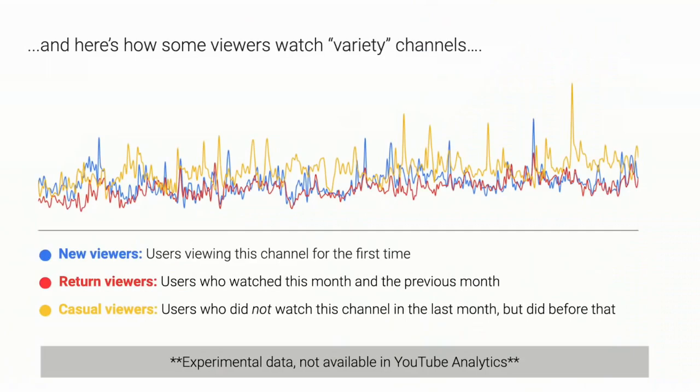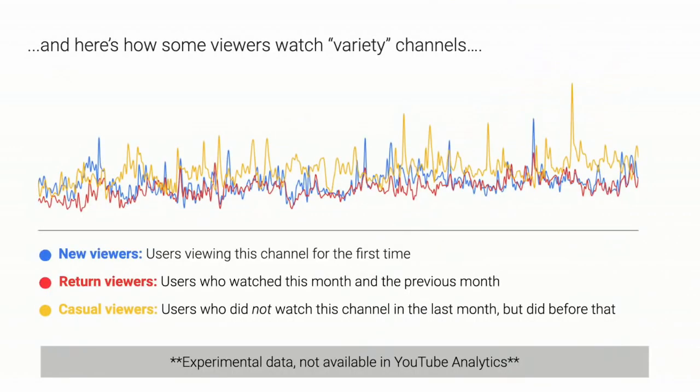Next I want to show a very different group — variety channels — that upload a variety or highly variable content, for example channels that cover breaking news, aggregators of movie trailers, or channels that cover trending topics. You can see these channels have very different audience trends. The top line is in yellow, indicating that channels with high variety in content are more likely to have more casual audiences — people constantly coming in and out, watching a few videos but less likely to return regularly.